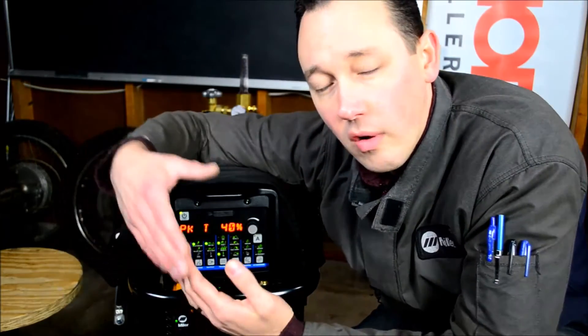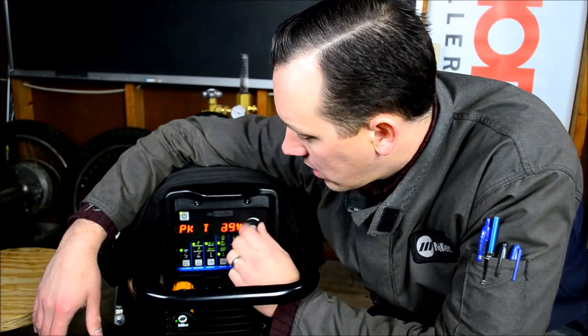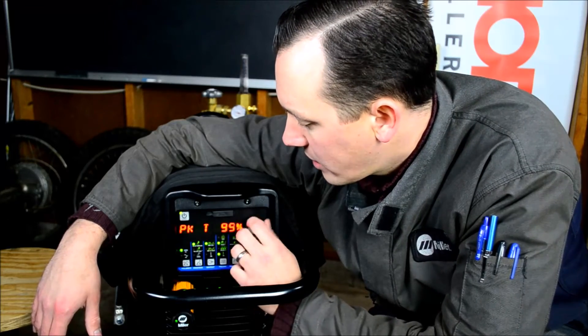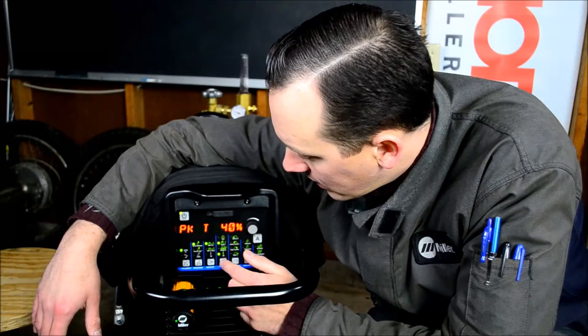Next is going to be our peak time. So how much time within a single cycle is spent at the peak amperage that we set on the front panel? 40% is the preset. We can take that from 5% up to 95%. But again, for demonstration, we'll just leave it at preset.